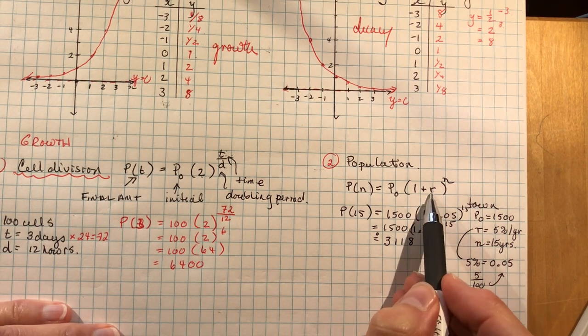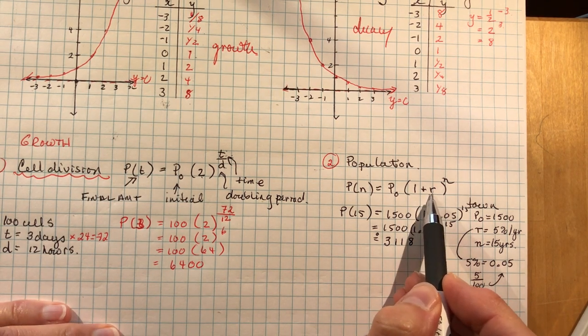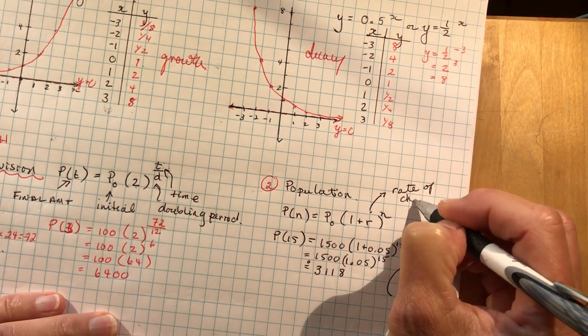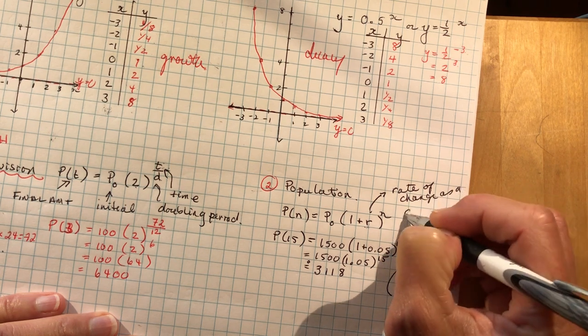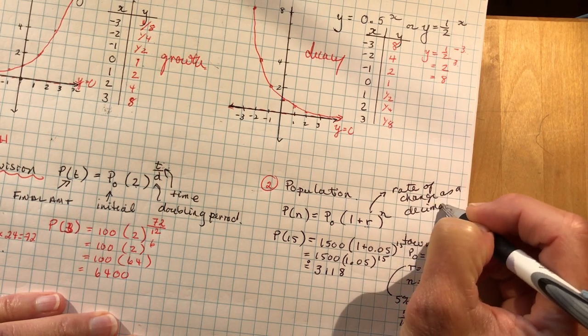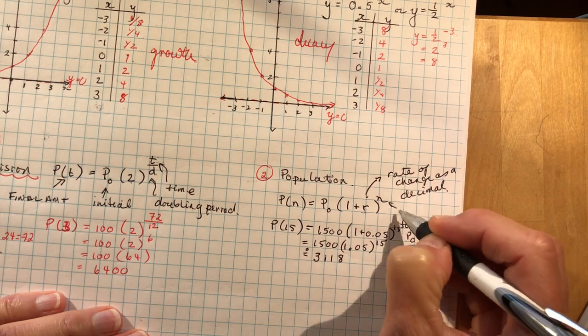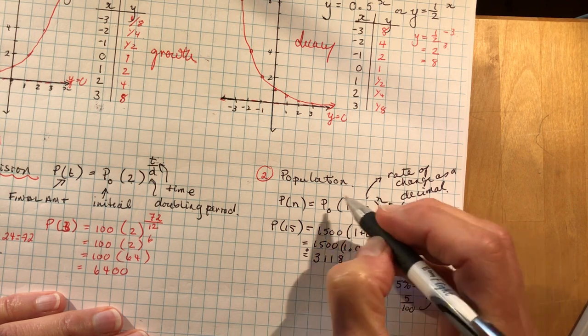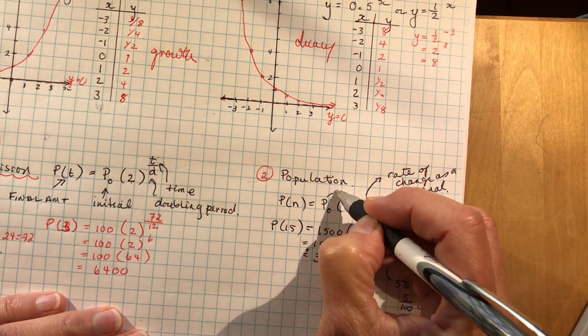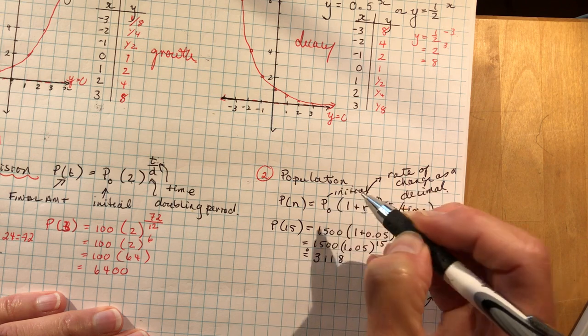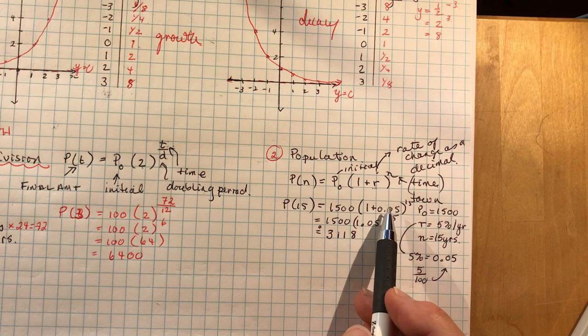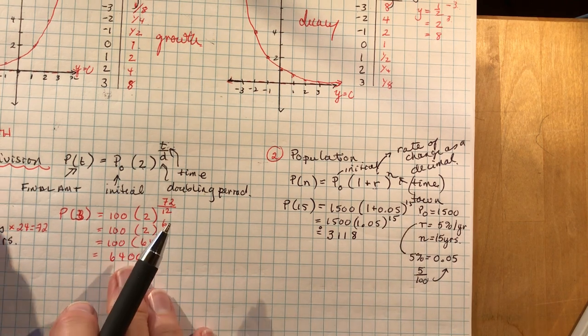So the key to these ones is making sure that your rate. This is your rate of change. Rate of change as a decimal. So make sure you change it to a decimal. N is the time. I would have used T if it was my equation, but this is your textbook using this. And this is your initial population. So the P₀ initial population, a rate of change. So that's the first two we're going to look at.